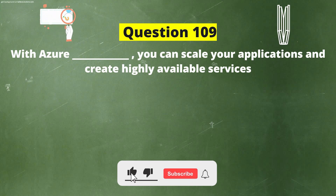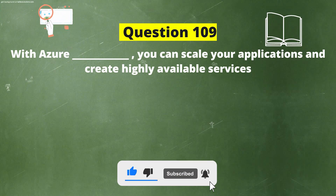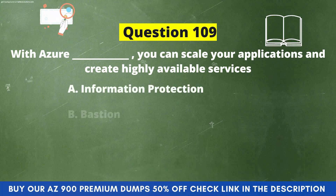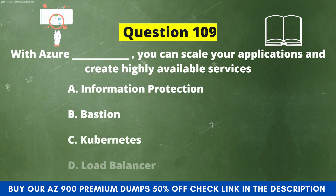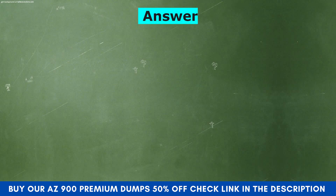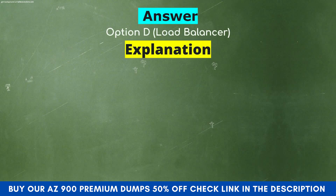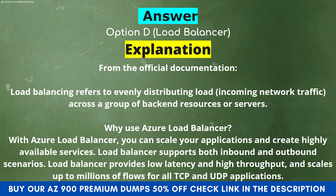Next question. With Azure Load Balancer, you can scale your applications and create highly available services. Option A: Information Protection. Option B: Bastion. Option C: Kubernetes. Option D: Load Balancer. The correct answer is Option D, Load Balancer. Load balancing refers to evenly distributing incoming network traffic across a group of backend resources or servers. Azure Load Balancer supports both inbound and outbound scenarios, provides low latency and high throughput, and scales up to millions of flows for all TCP and UDP applications.